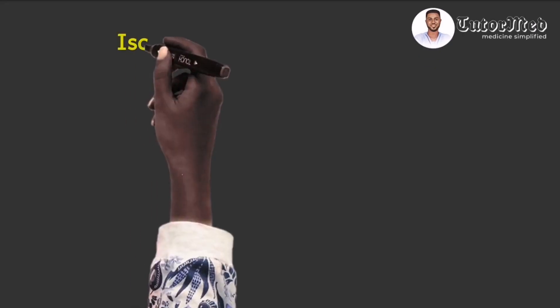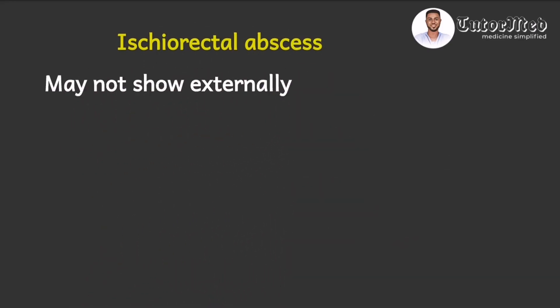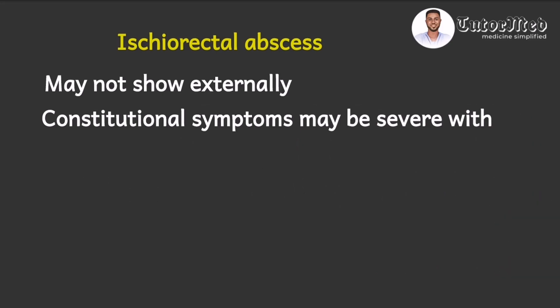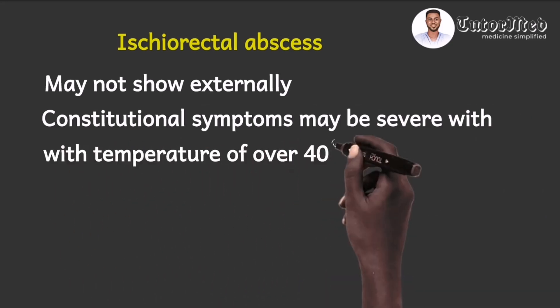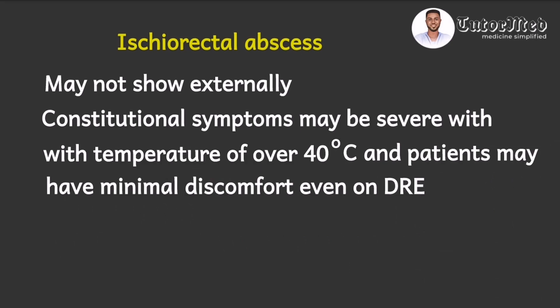Let's contrast that with the second most common anorectal abscess, which is the ischioanal or ischiorectal abscess. These abscesses may not show externally because their location is relatively deeper than the perianal abscess. Deeper abscesses usually have constitutional symptoms which may be severe — sometimes patients may have a temperature of more than 40 degrees — and patients may have minimal discomfort on the digital rectal examination. This fits the clinical case more than perianal, and since he felt it on the right, that is how we diagnosed a right ischioanal abscess in this patient.